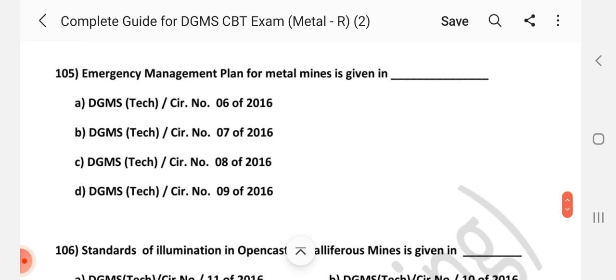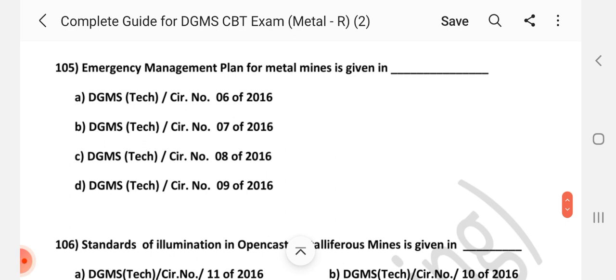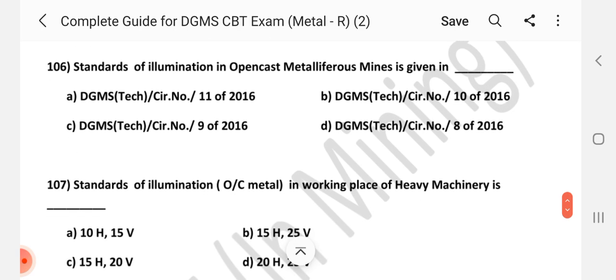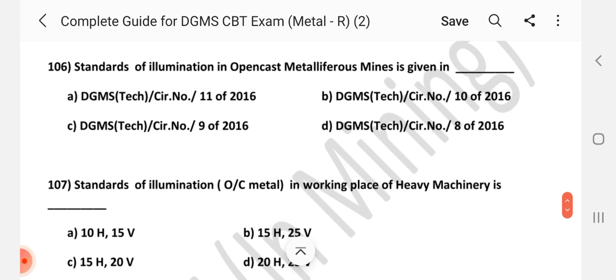Question number 105. Emergency management plan for metal mines is given in dash. Answer is C, DGMS Tech Circular number 8 of 2016. Question number 106. Standards of illumination in open cast metallic forest mines is given in dash. Answer is DGMS Tech Circular number 11 of 2016.